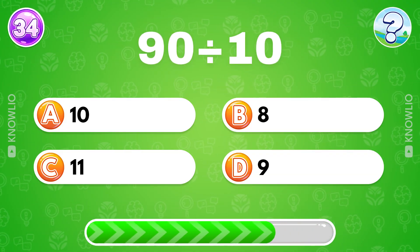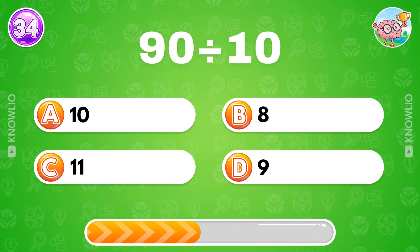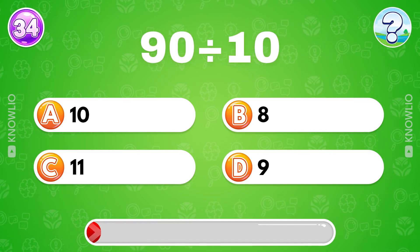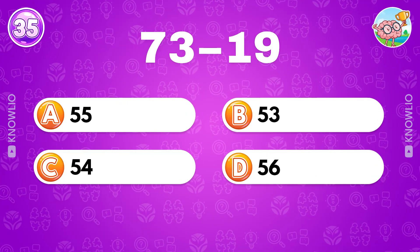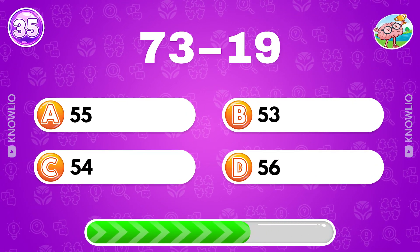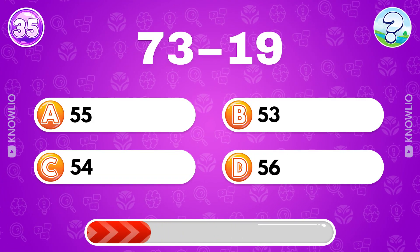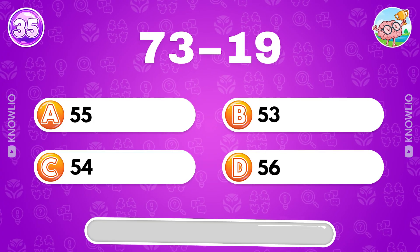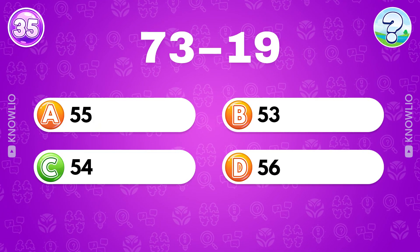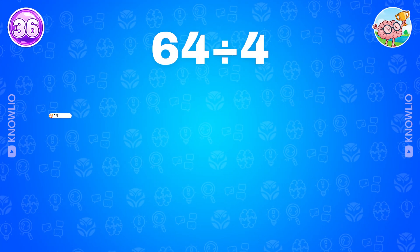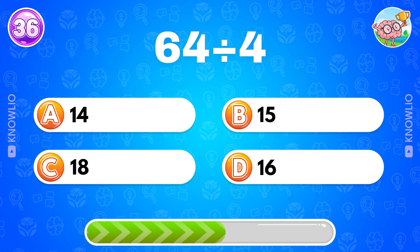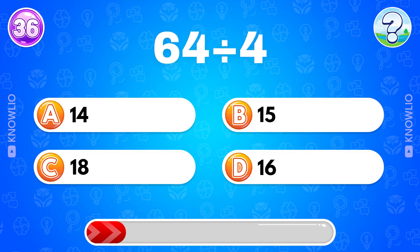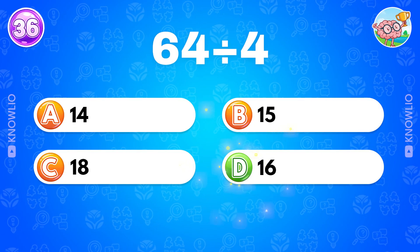90 divided by 10? Answer D, 9. 73 minus 19? Answer D, 54. Answer D, 16.